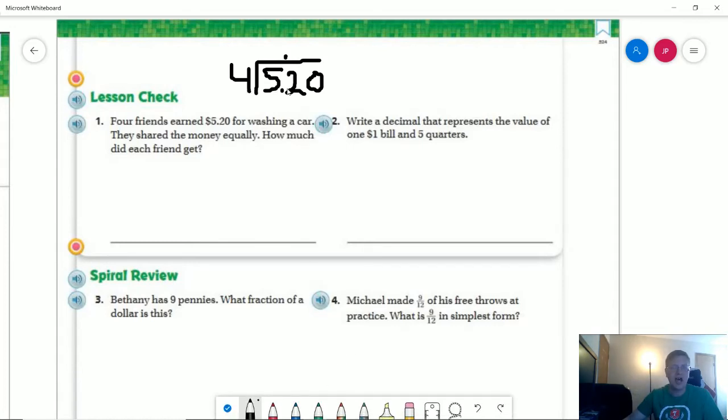So this is one that we could use a regular division strategy for. So I could do $5.20 divided by 4. I get 1. And I have 12 for the next part. 12 divided by 4 would give me 3. And then I am going to be finished with the problem because as soon as I bring down my zero, I will get a zero.